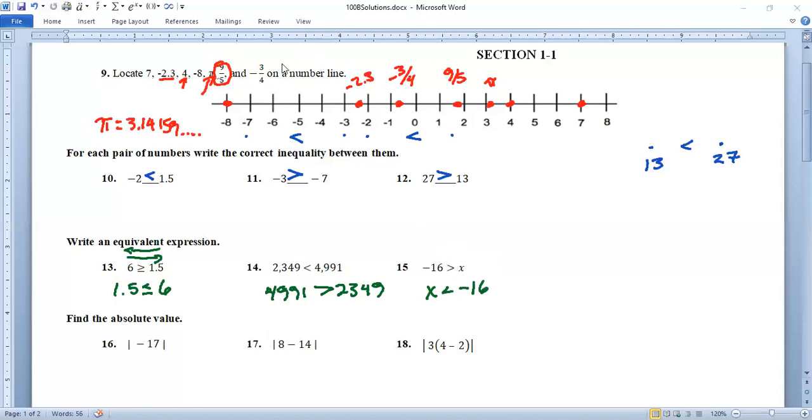Find the absolute value. Absolute value just makes things positive. So the absolute value of negative 17 is 17. 8 minus 14 is a negative 6. Absolute value of negative 6 is 6. And 3 times 4 minus 2 is 2. So 3 times 2 is 6. So we have the absolute value of 6 is 6. It doesn't make it opposite. It doesn't turn it into a negative 6. It just makes everything positive.